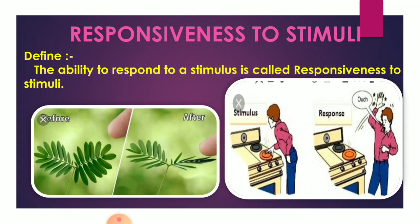Responsiveness to stimuli. We define it as the ability to respond to a stimulus is called responsiveness to stimuli. I have given two examples here. The first example is of the Mimosa plant. When you touch the leaves of the Mimosa plant, it automatically closes.